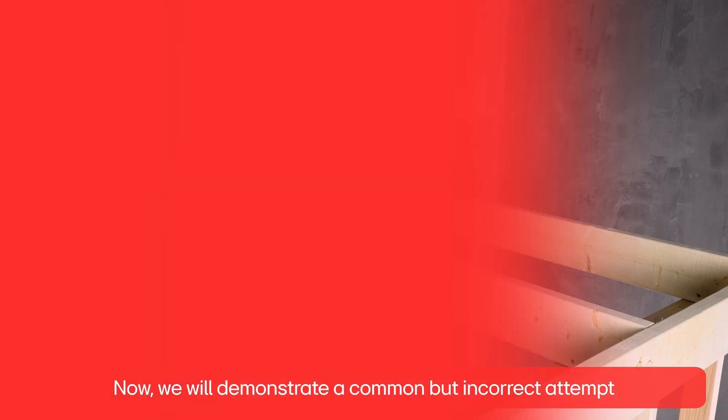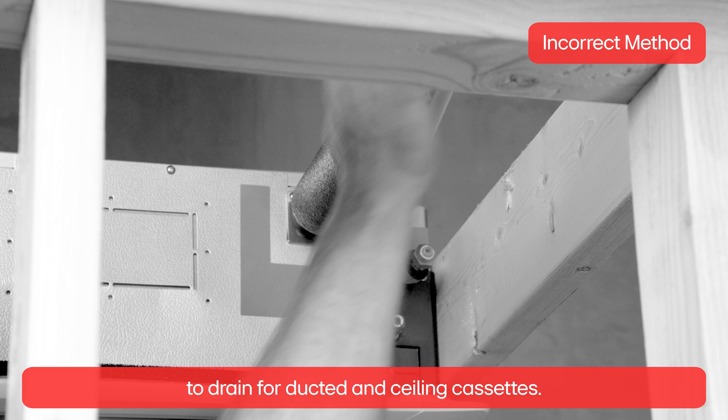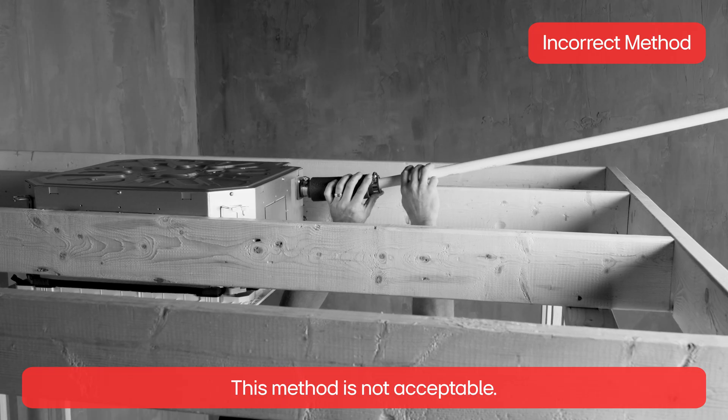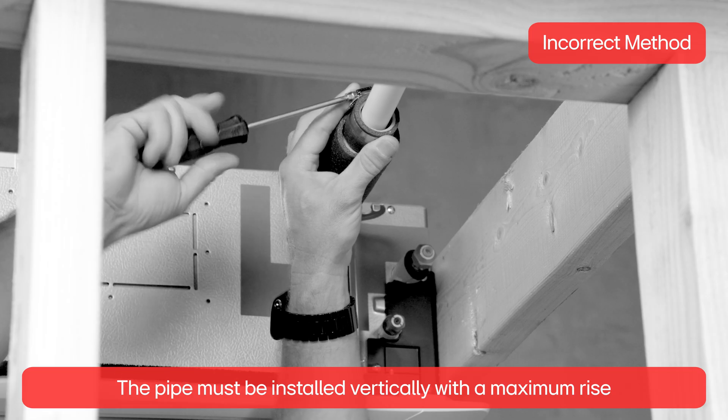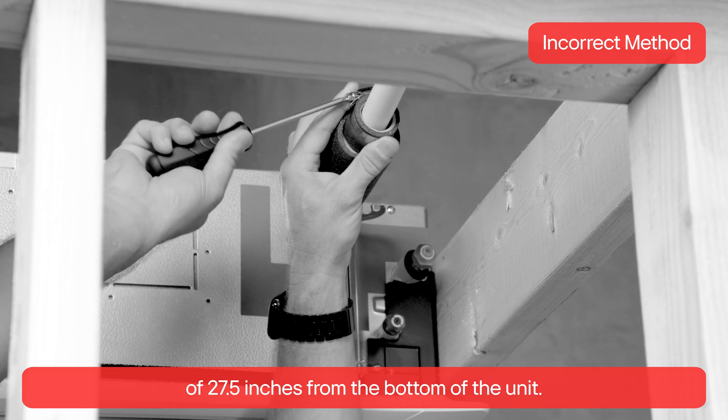Now, we will demonstrate a common but incorrect attempt to drain for ducted and sealing cassettes. This method is not acceptable. The pipe must be installed vertically with a maximum rise of 27.5 inches from the bottom of the unit.